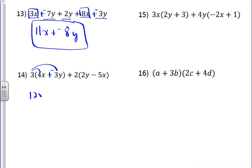Which would give you 12x plus negative 9y. And then 2 times 2y and 2 times negative 5x gives you a positive 4y and a negative 10x.